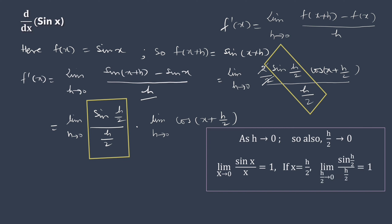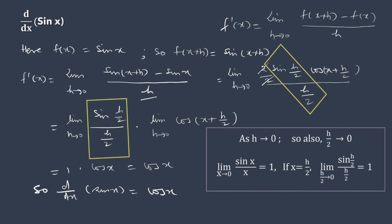Putting x equals h over 2, we get. If you are not familiar with this limit, subscribe and watch the video on this limit — the link is given in the description. Clearly, the first limit is 1, while the second is cos x. Thus the limit is cos x. Now memorize: the derivative of sine x is cos x, and use it freely whenever you need it.